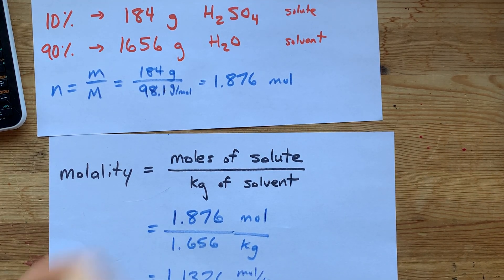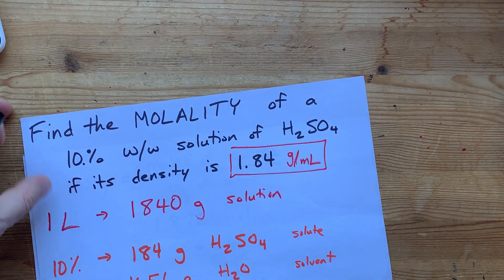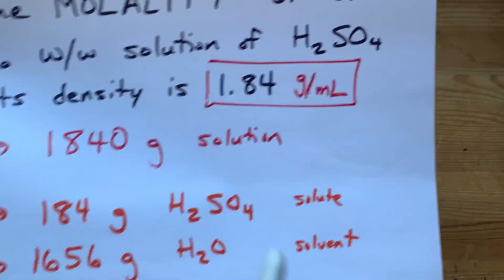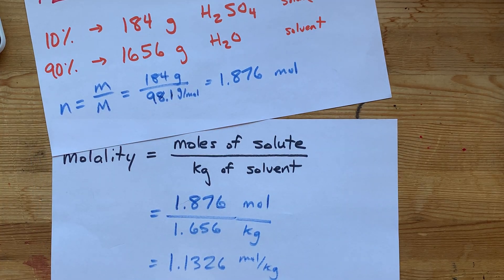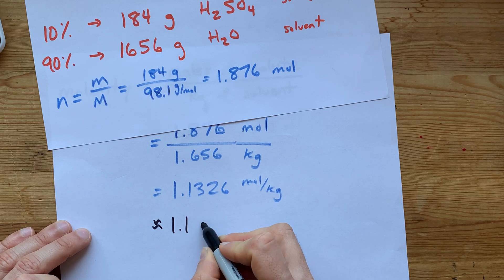If we use significant figures, well, let's assume that that's 10 point. That's two sig figs there. This is three significant figures. My molar mass had three significant figures. Let's assume this is two significant figures. It's going to be 1.1 molal.